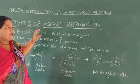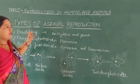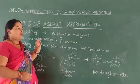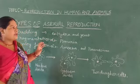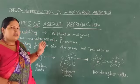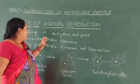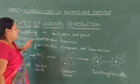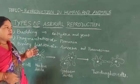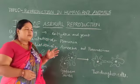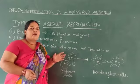Asexual reproduction is found in lower chordates or non-chordates — that is phylum Protozoa, phylum Porifera, phylum Coelenterata, phylum Platyhelminthes, and so on.